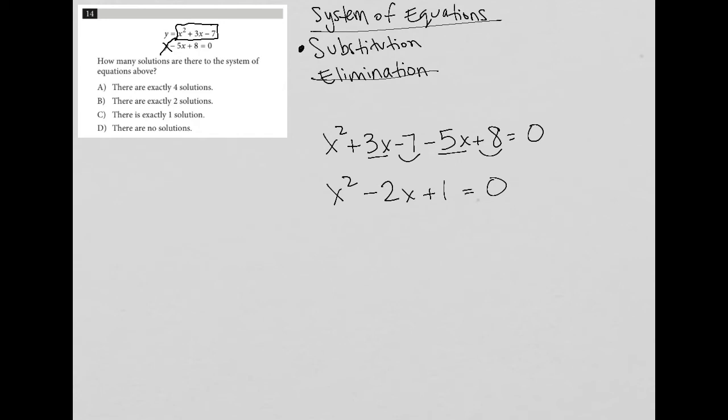Well, whenever I have a trinomial set equal to 0, I look to factor it by seeing, are there two numbers that multiply to give me the last term here and add up to the middle term? Well, yes, there are. So negative 1 times negative 1 is positive 1, and negative 1 plus negative 1 is negative 2. So I can factor that trinomial into x minus 1 times x minus 1 equals 0,